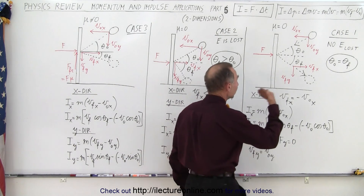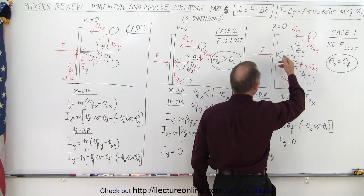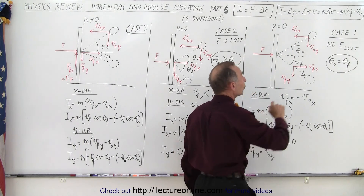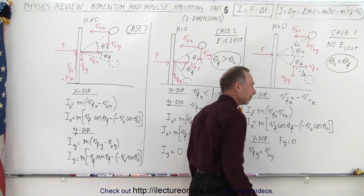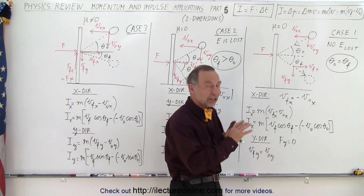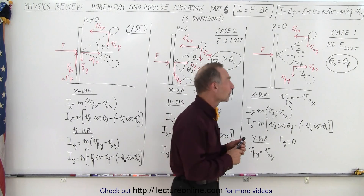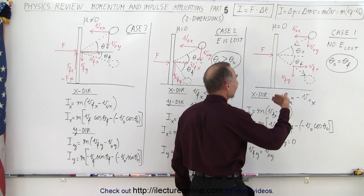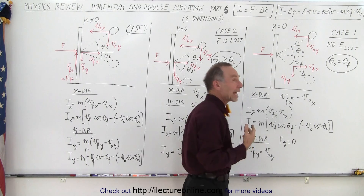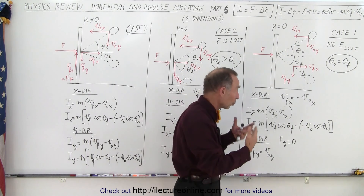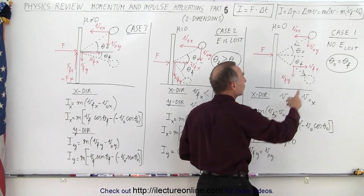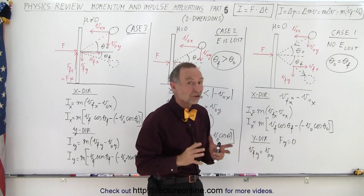Here's our first case. We have a ball that hits a wall with no friction between the ball and the wall — that's really important. We're also going to assume that no energy is lost; in the real world energy is always lost, but let's assume it's not. This is kind of like light hitting a wall: the angle of incidence equals the angle of reflection, so the incoming angle and the outgoing angle are equal to one another. That's because no energy is lost.